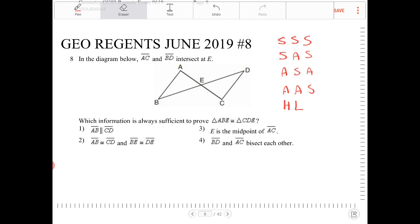Option four. BD and AC bisect each other. That would work. Because then, if BD and AC bisect each other, then these two sides are congruent. And these two sides are congruent. And we have a pair of vertical angles there. Then we can prove these two triangles are congruent based on SAS. So that would be option four.